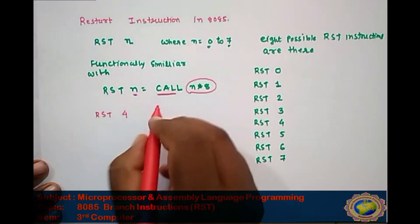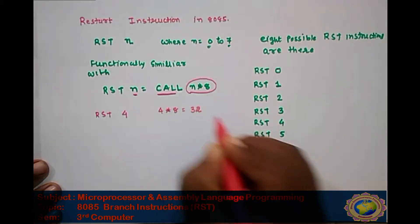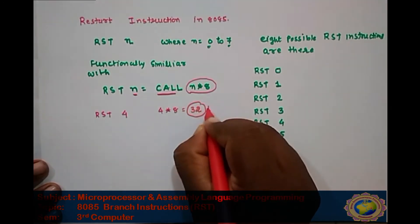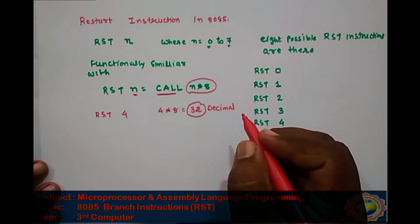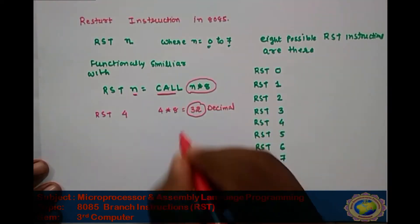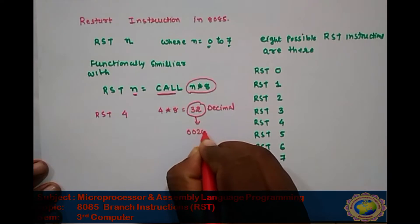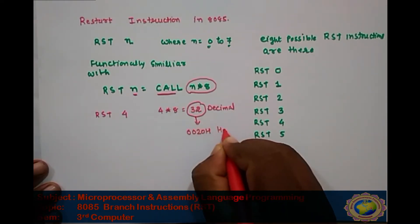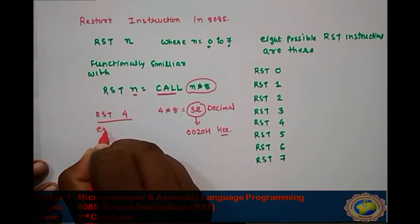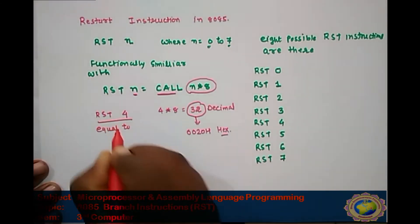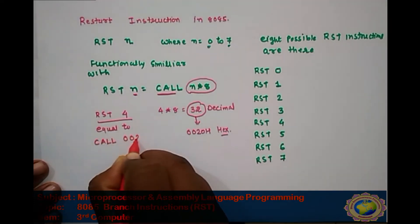For example, in the CALL instruction, if n equals 4, then 4 multiplied by 8 is 32. This 32 is in decimal. Since all instructions in the 8085 are converted into hex code, the value 32 is converted to hex, which is 0020H. So RST 4 is equal to CALL 0020H.